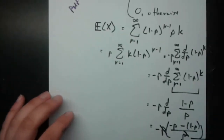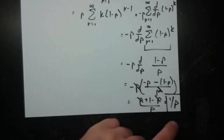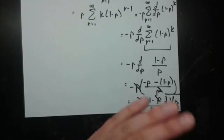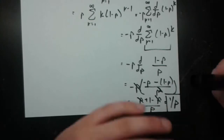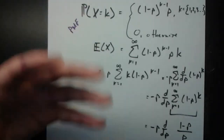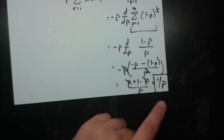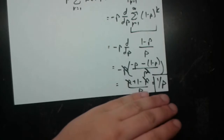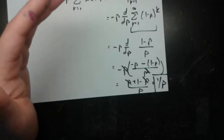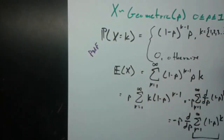Intuitively, E[X] = 1/p makes sense: if the probability of success is very small, like 0.001, then 1/0.001 is very large, meaning we need many trials on average. On the other hand, if p equals 1, we always succeed on the first trial, so E[X] equals 1 — not a very interesting random variable in that case.